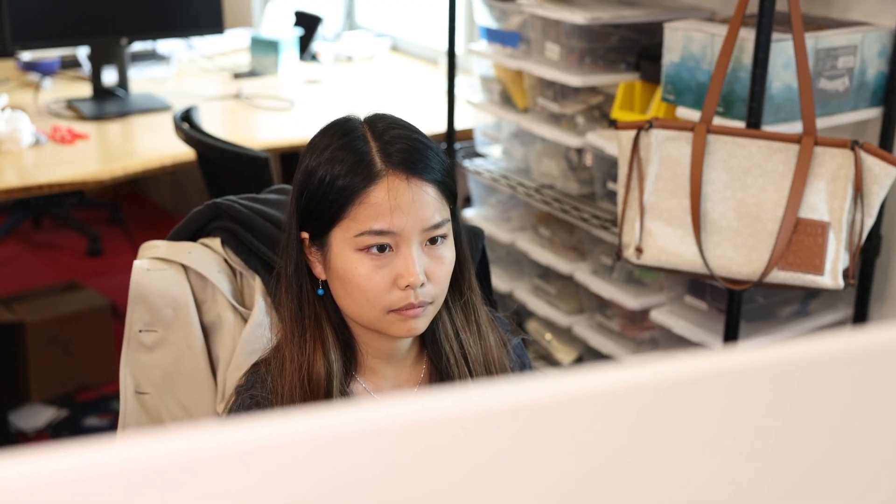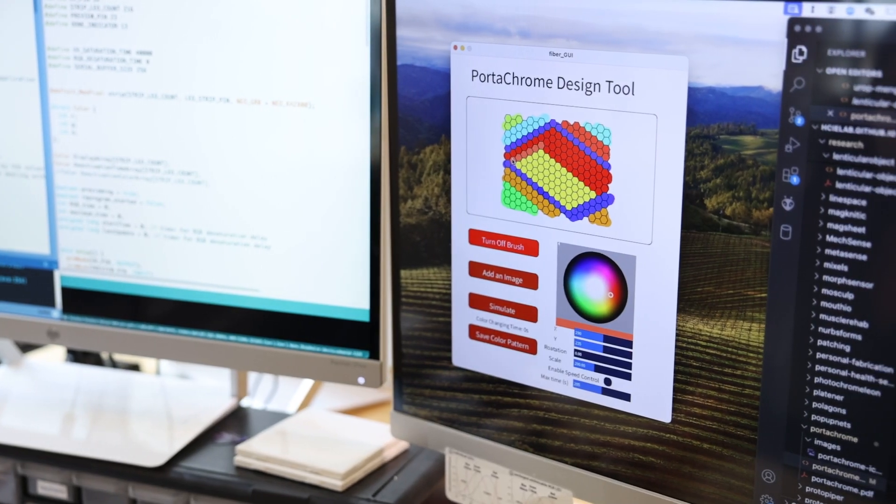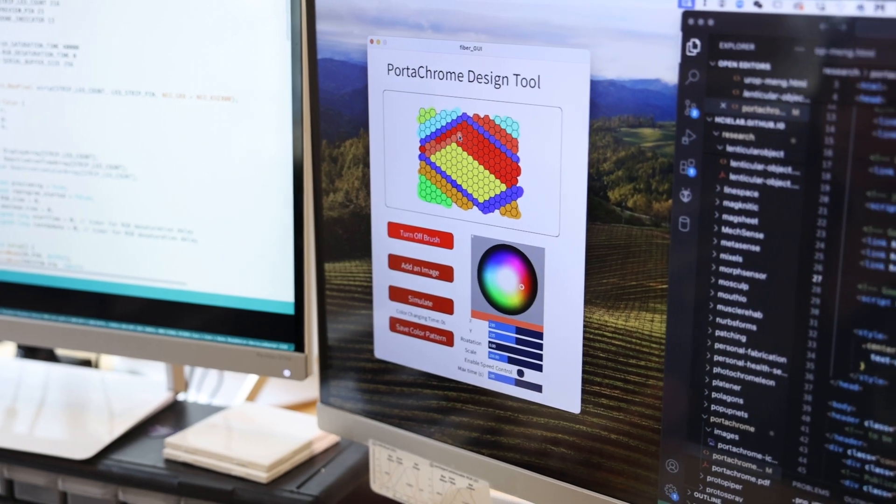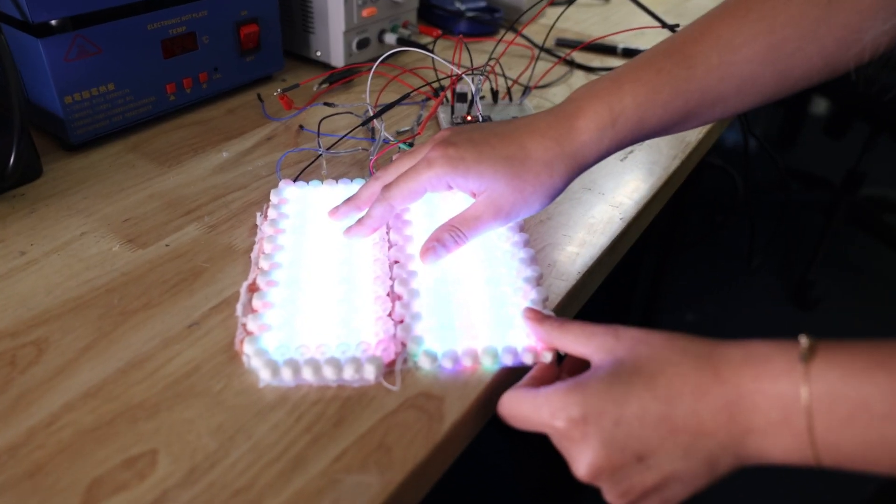In our research with photochromics, we are able to put multiple patterns on the same object at different times. Photochrome is a light source that's portable and flexible, which integrates the color changing process into users' everyday interaction.